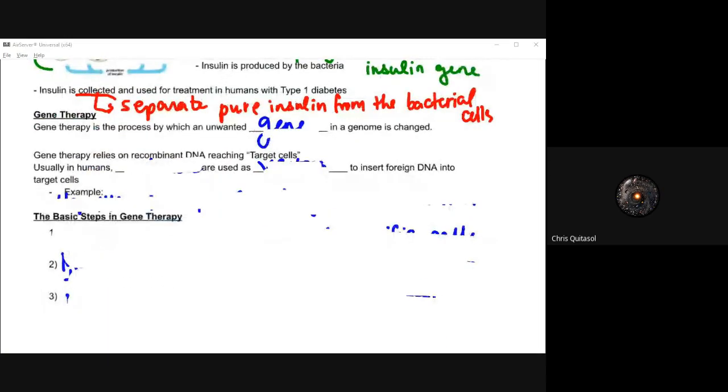Looking at gene therapy as a treatment for unwanted genetic or genome errors or issues is another method with which we can utilize this type of gene editing or recombinant DNA to help humans. Gene therapy relies on recombinant DNA reaching target cells, and we usually use viruses to deliver what's called a vector to insert foreign DNA into cells.